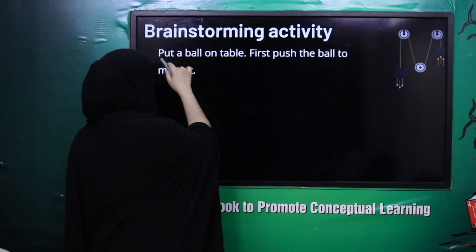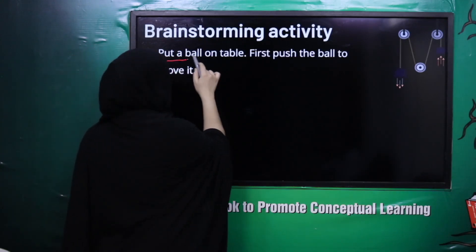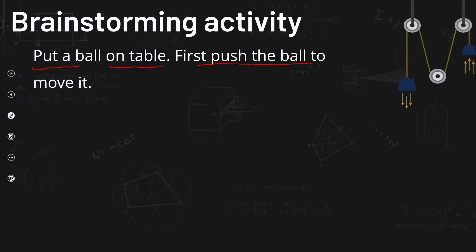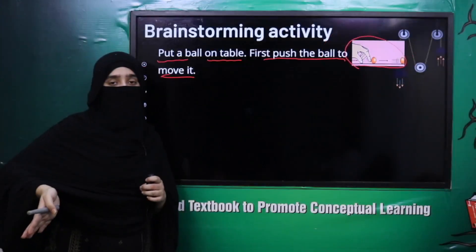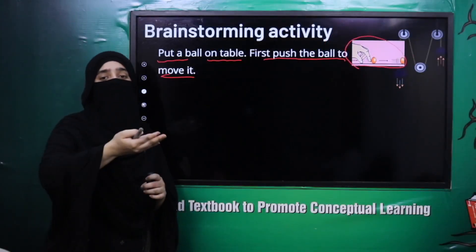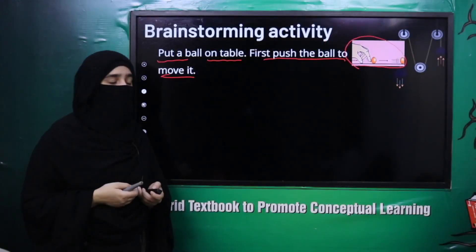Lecture start karte hain activity ke saath. Put a ball on table, first push the ball to move it. Sabse pehle table pe ek ball rakhein aur usko push karein, to aap dekhenge ki wo movement start kar dega, usme motion start ho jaayegi, wo apni position se hilna shuru ho jaayega.